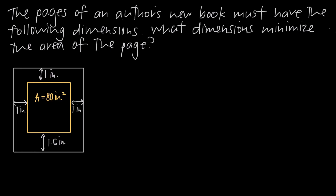As with any applied optimization problem, the first thing we need to do is look for the word maximize or minimize, or maximum or minimum, because we need to know what we're trying to maximize or minimize. If we look in this problem, we see minimize, so we're going to minimize the area of the page. Whatever you're trying to maximize or minimize, you need to write an equation for that — that'll be your optimization equation.